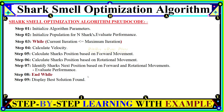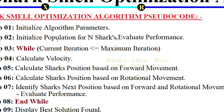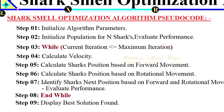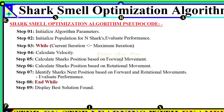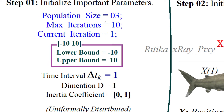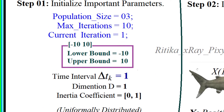Now we look at the various steps used in this algorithm. First, we initialize all important parameters, then initialize the population for N sharks and evaluate their performance using a cost function. Then we check the stopping criteria, update velocity and position, evaluate performance for new solutions, and when the stopping criteria is met, display the best solution found. For simplicity, we will consider a population size of 3 — so we have 3 sharks in the search space.